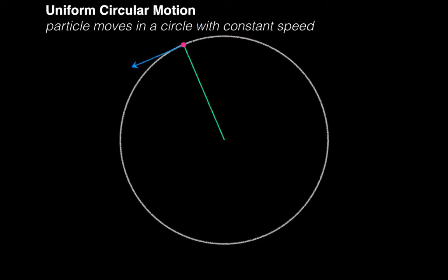Here's a more sterile animation that shows a particle, the pink dot, undergoing uniform circular motion. The velocity of the particle is shown in blue. As you can see, the length of the velocity vector is not changing, indicating that the speed is constant. So, if the speed is not changing, do you think the particle is accelerating?